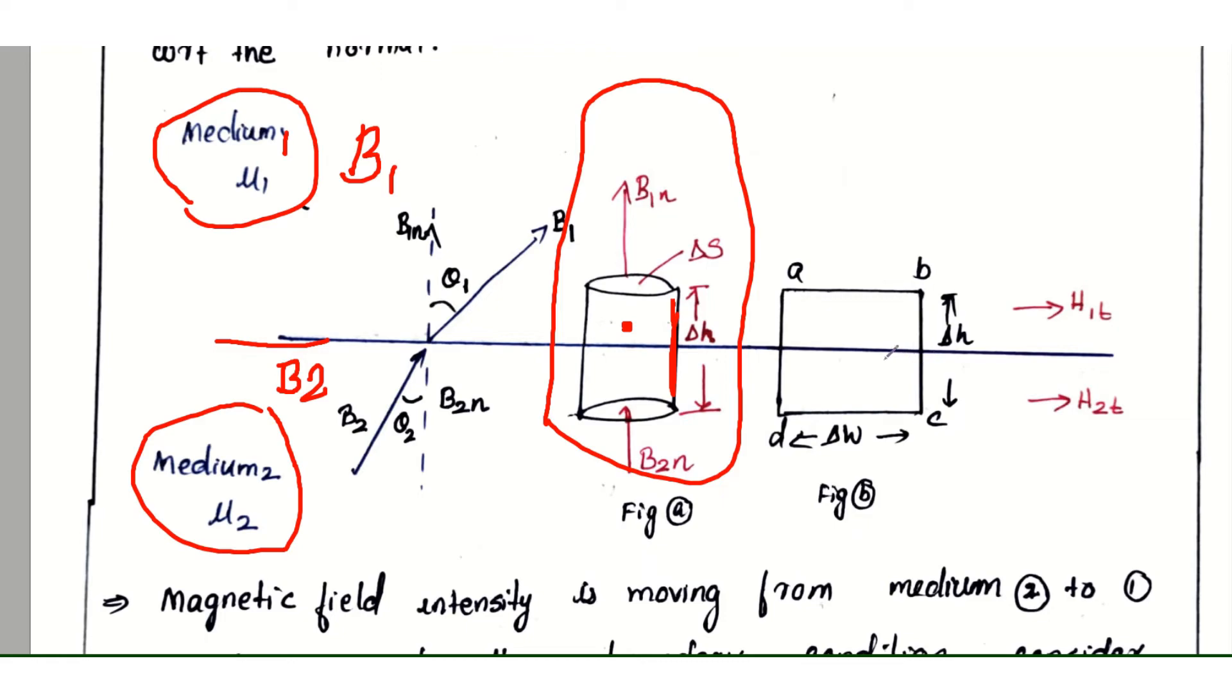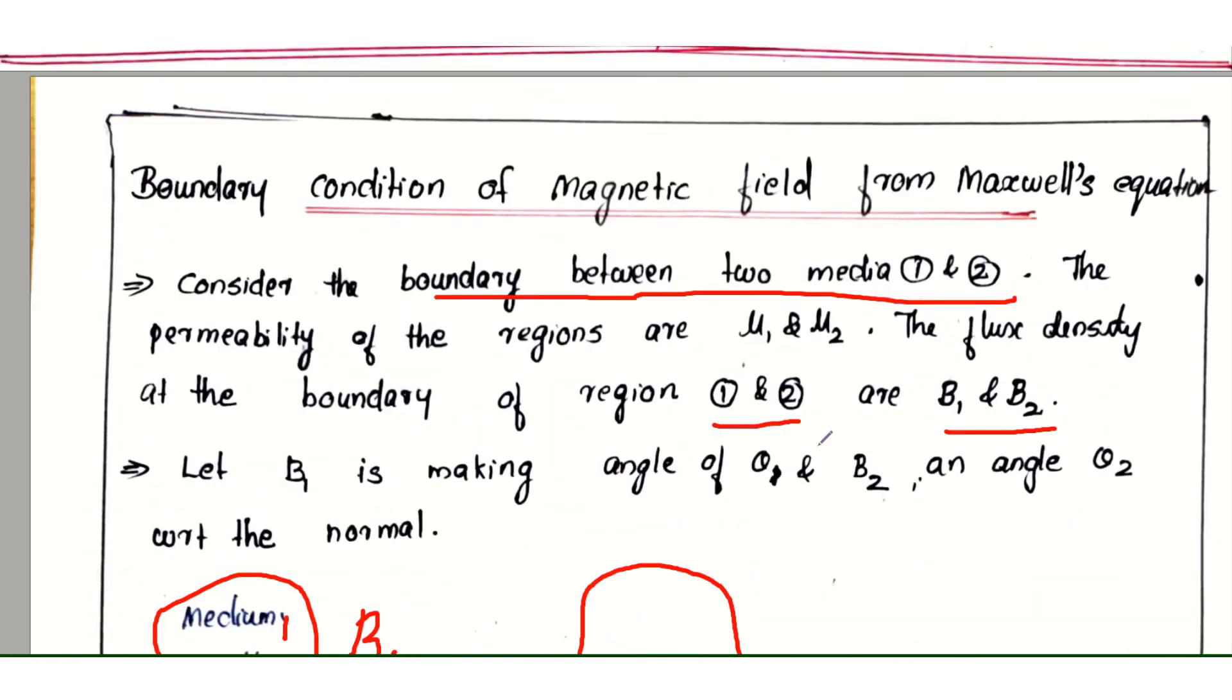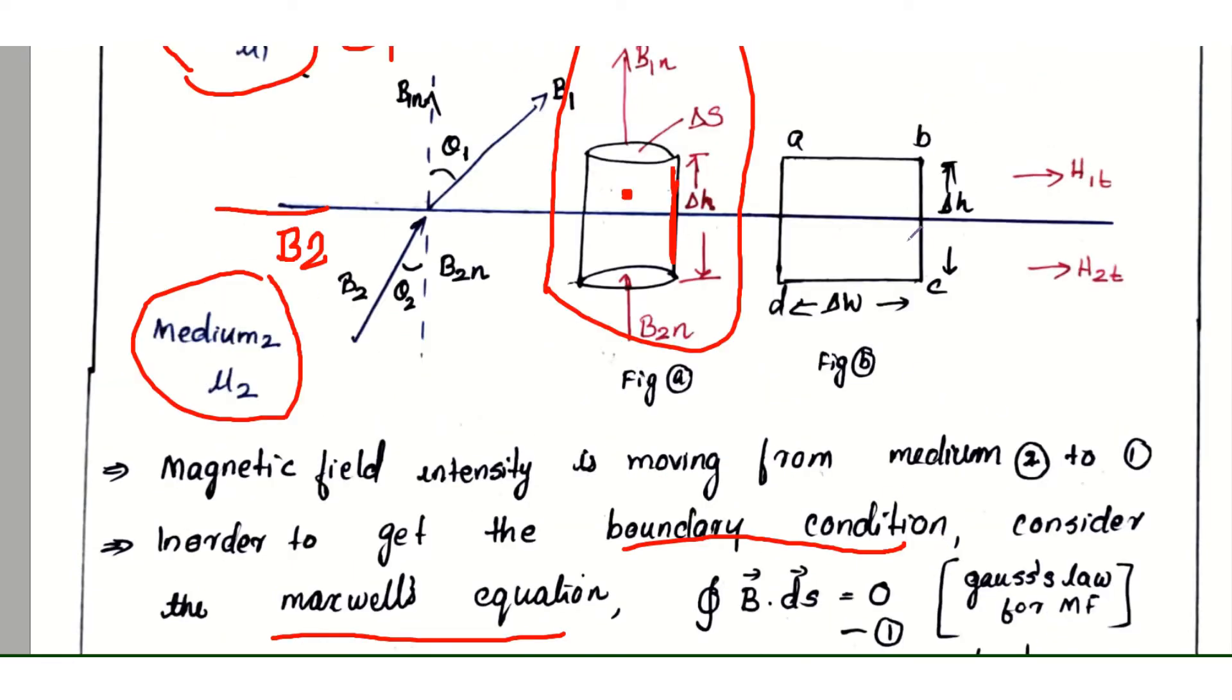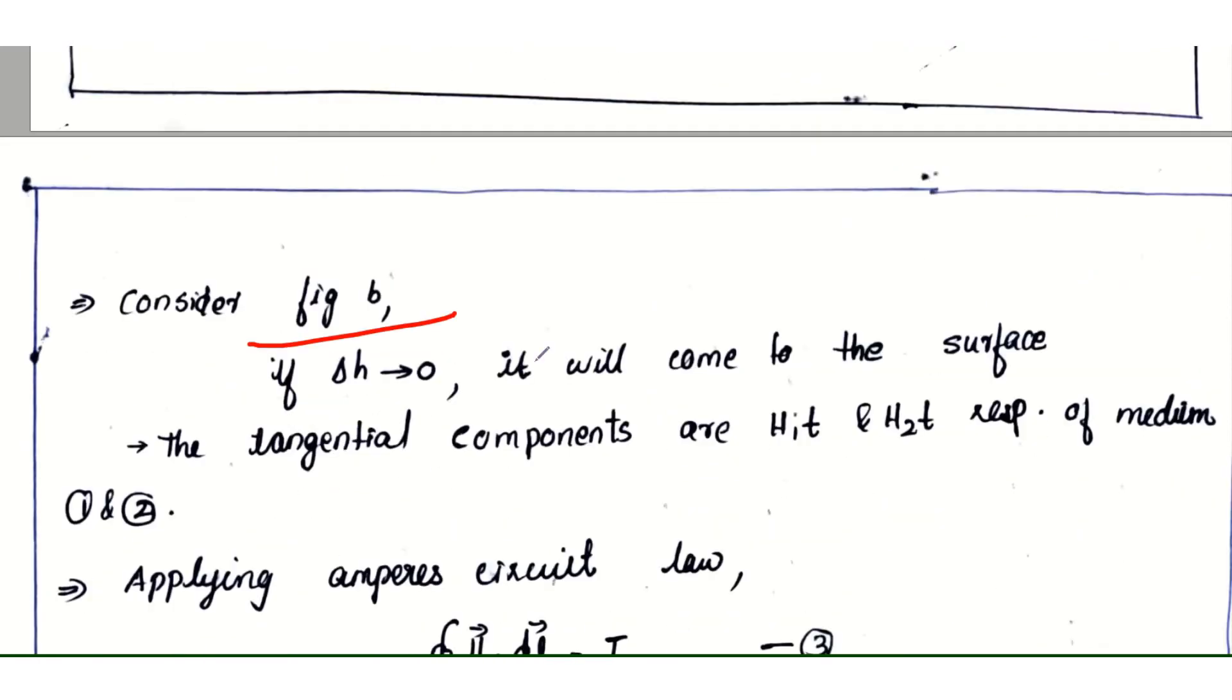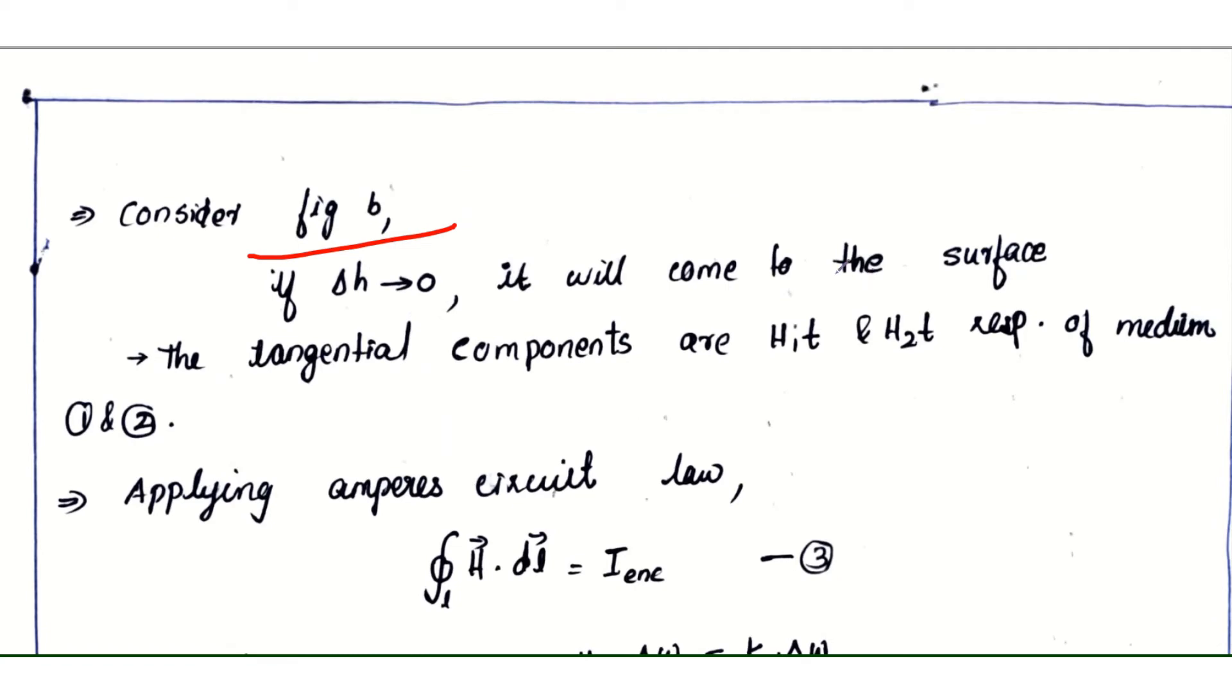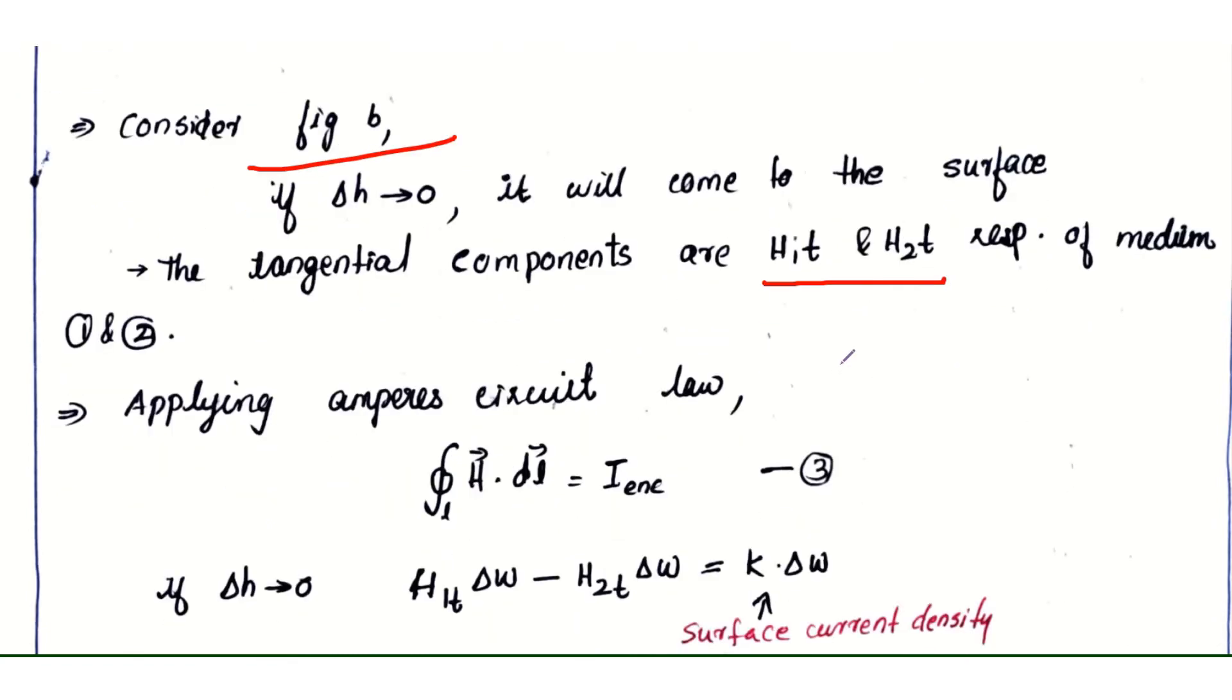This is height Δh with width Δw. If we consider Δh → 0, it will come to the surface. The tangential components are H₁ₜ and H₂ₜ at the top and bottom of the medium.